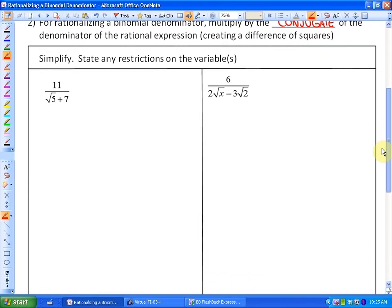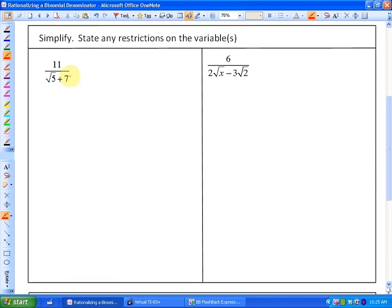I'm actually just going to do the first one to show you how it works. On this one, we've got a binomial denominator. And I'll tell you right now that in order to rationalize this denominator, the conjugate of root 5 plus 7 is the square root of 5 minus 7.